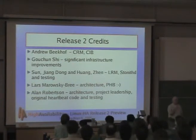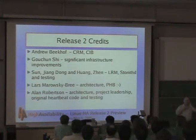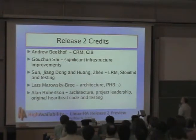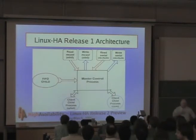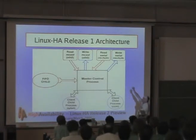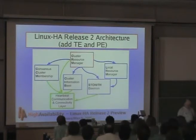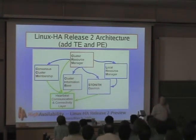For release two credits, I want to give special credit to Andrew Beekhof who wrote by far the most complex piece of release two — the CRM and CIB — which we'll get to in a minute. Other people who work for NCSA in the US and for IBM in China also contributed. Lars Marowsky-Brée largely defined the architecture and has been a kind of PHB-level boss for Andrew. The paradigm of open source software is you get a project together and get other people to do it. I'm going to talk more about the release two architecture because I think it's far more interesting.